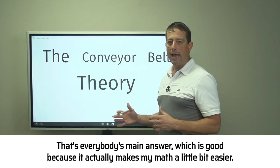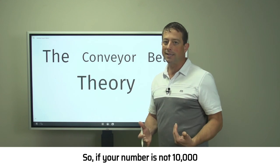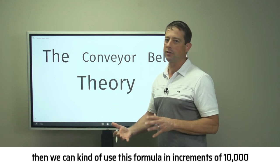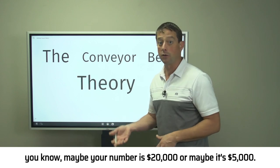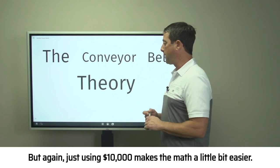That's everybody's main answer, which is good because it makes my math easier. If your number is not $10,000, we can use this formula in increments—maybe your number is $20,000 or $5,000. But using $10,000 makes the math easier.